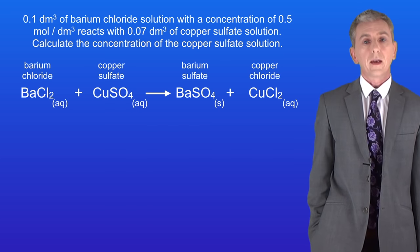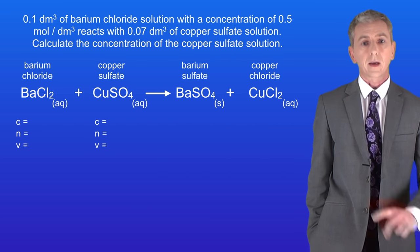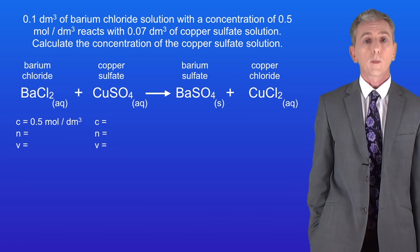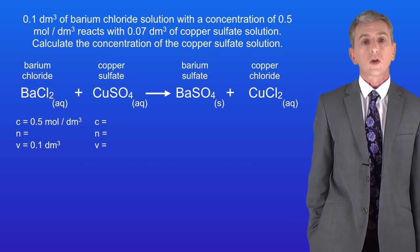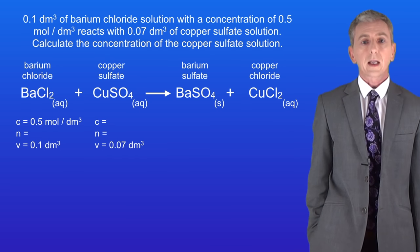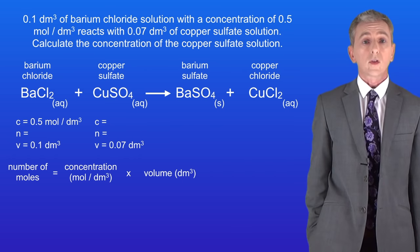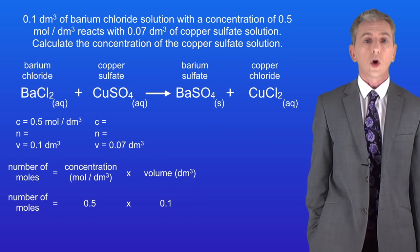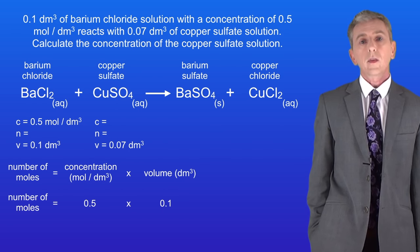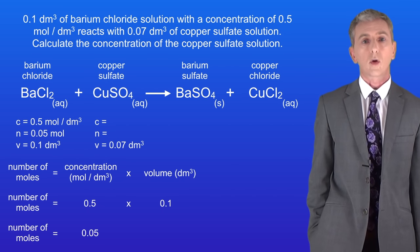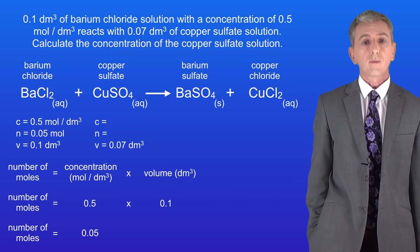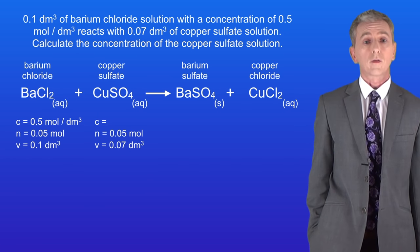Now we write C equals, N equals, and V equals under both reactants, then enter the information given. The concentration of the barium chloride solution is 0.5 moles per decimetre cubed and the volume is 0.1 decimetres cubed. The volume of the copper sulphate solution is 0.07 decimetres cubed. The number of moles of barium chloride equals concentration multiplied by volume: 0.5 × 0.1 = 0.05 moles. Since one mole of barium chloride reacts with one mole of copper sulphate, we must also have 0.05 moles of copper sulphate.